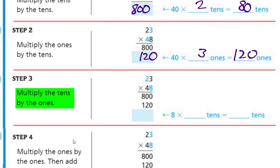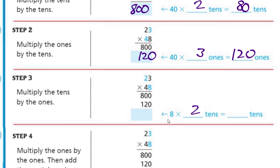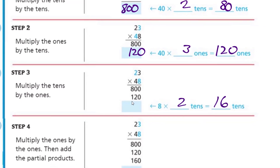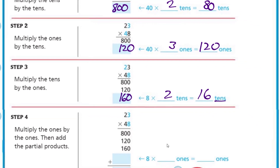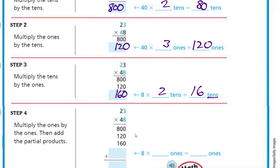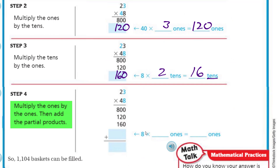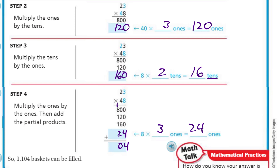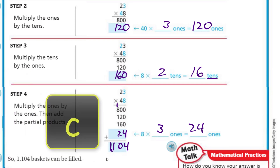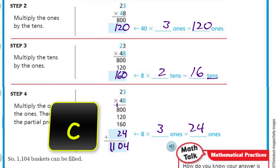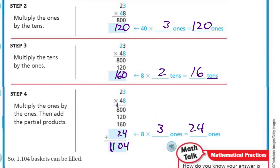Step three: multiply the tens by the ones. We have our 20 — our 2 tens — times our 8, giving us 16 tens, which of course is 160. It's important that we make sure we put that back on. Step four: multiply the ones by the ones, then add the partial products. 8 times 3 ones is simply 24 ones, so we put our 24 down. Adding our partial products we end up with 4, then 8, and 2 is 10 — carry the 1 — giving us 1,104. So 1,104 baskets can be filled.